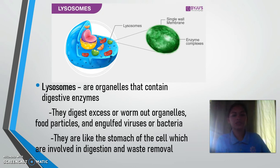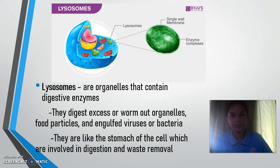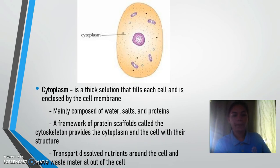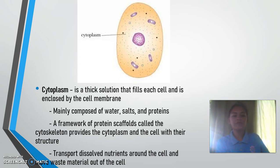Lysosomes are organelles that contain digestive enzymes. They digest excess or worn-out organelles, food particles, and engulfed viruses or bacteria. They are like the stomach of the cell, involved in digestion and waste removal. Cytoplasm is a thick solution that fills each cell and is enclosed by the cell membrane. It is mainly composed of water, salt, and protein, with a framework of proteins called the cytoskeleton that provides the cytoplasm and the cell with their structure. It transports dissolved nutrients around the cell and moves waste material out.